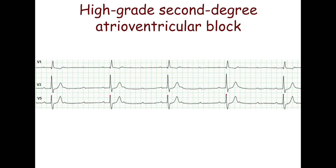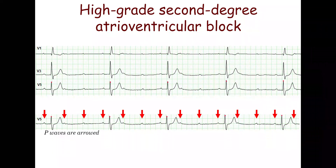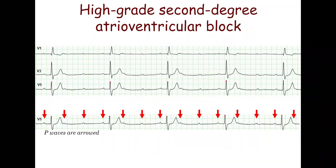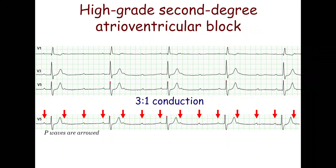A high-grade second-degree atrioventricular block is characterized by a fixed P-to-QRS ratio — 3 to 1, 4 to 1, etc. This ECG shows a ventricular rate of 27 beats per minute with constant PR intervals, and every third P wave is conducted.